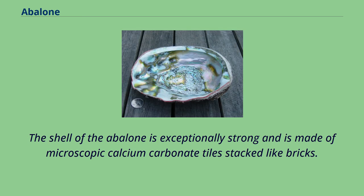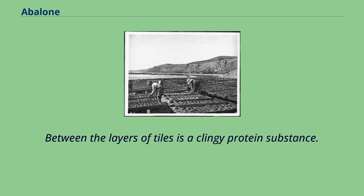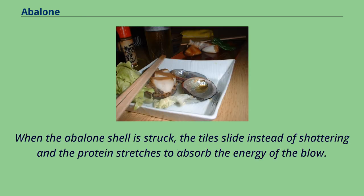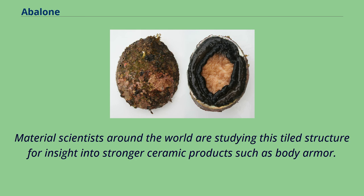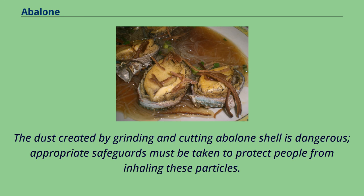The shell of the abalone is exceptionally strong and is made of microscopic calcium carbonate tiles stacked like bricks. Between the layers of tiles is a clingy protein substance. When the abalone shell is struck, the tiles slide instead of shattering and the protein stretches to absorb the energy of the blow. Material scientists around the world are studying this tiled structure for insight into stronger ceramic products such as body armor. The dust created by grinding and cutting abalone shell is dangerous, and appropriate safeguards must be taken to protect people from inhaling these particles.